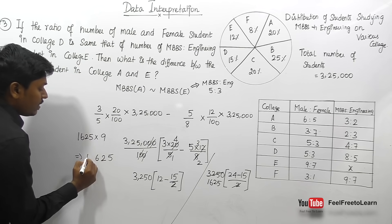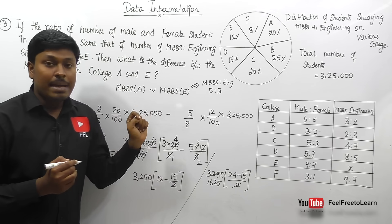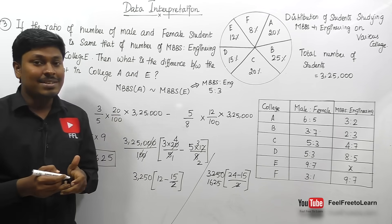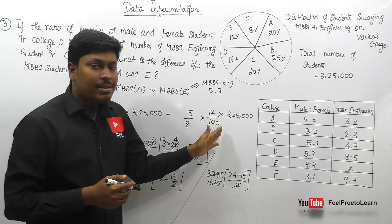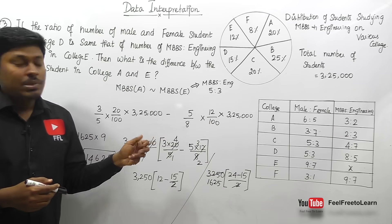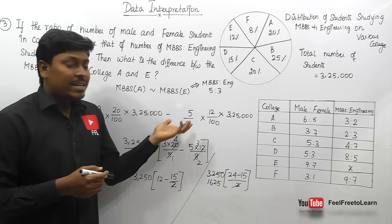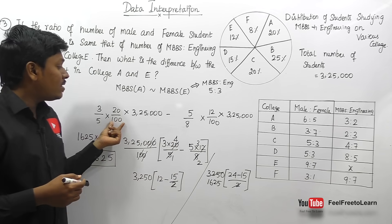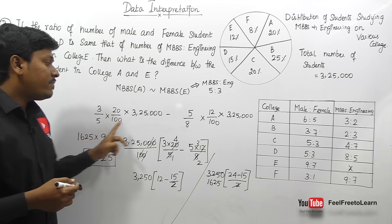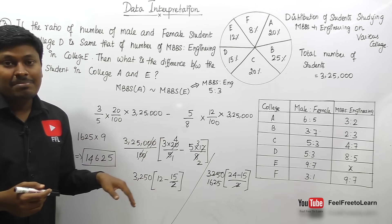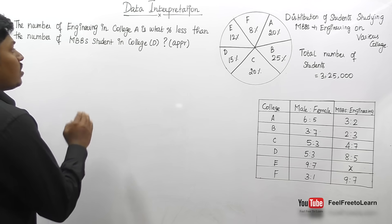The difference between MBBS students in college A and college E is 14,625. Always take 3,25,000 and 100 as common from both terms rather than calculating each side separately — that would waste over a minute. Simplifying together gives the answer of 14,625 for question 3.